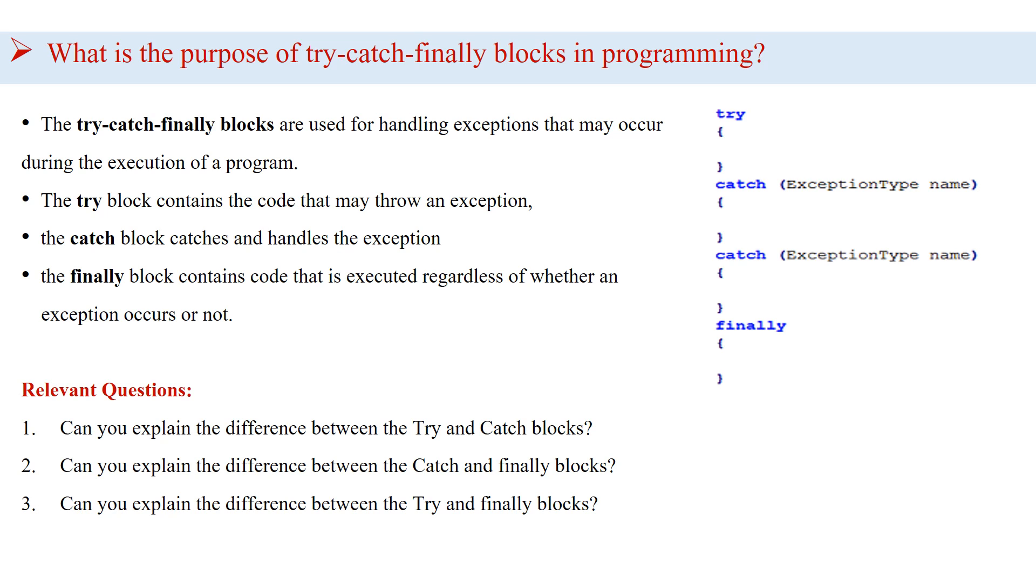The try block contains the code that may throw an exception. The catch block catches and handles the exception. And the finally block contains code that is executed regardless of whether an exception occurs or not.